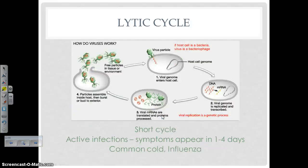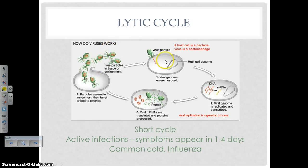Here's a picture showing the lytic cycle — this is number 10 on your notes organizer. The virus attaches, breaks down the cell's DNA so that the viral DNA becomes the new set of instructions, and the cell starts building nucleic acids and protein coats that assemble into new viruses. So many viruses are built that the cell bursts and they're released. Then the whole process starts over — we've gone from 1 virus to 7 in a very short period of time, each finding new cells. These are called active infections because symptoms appear in 1 to 4 days. Examples would be the common cold and the flu.